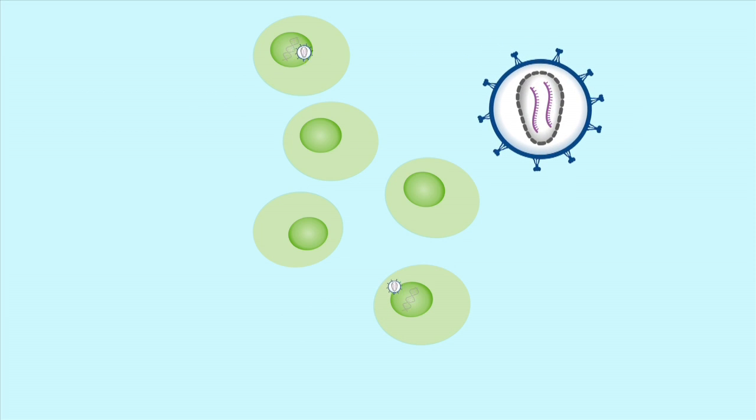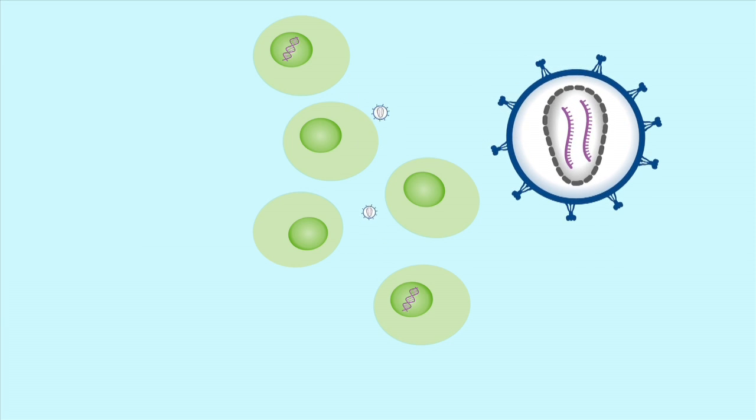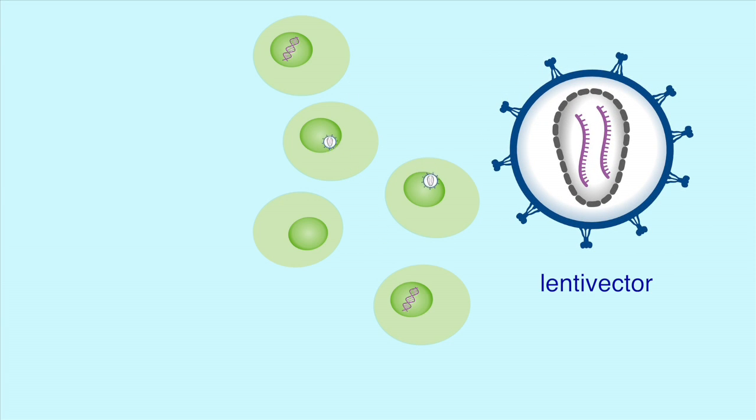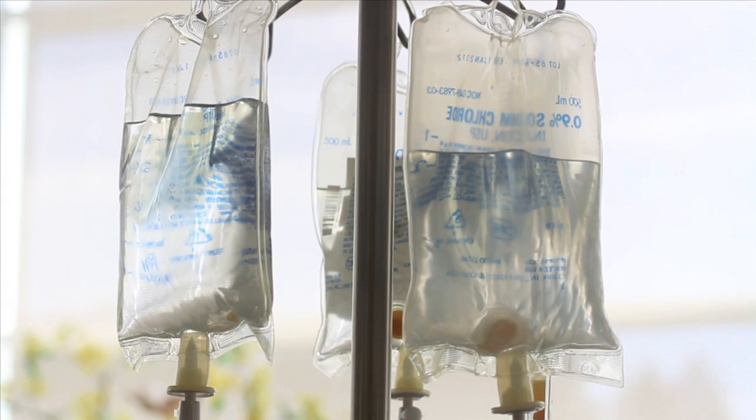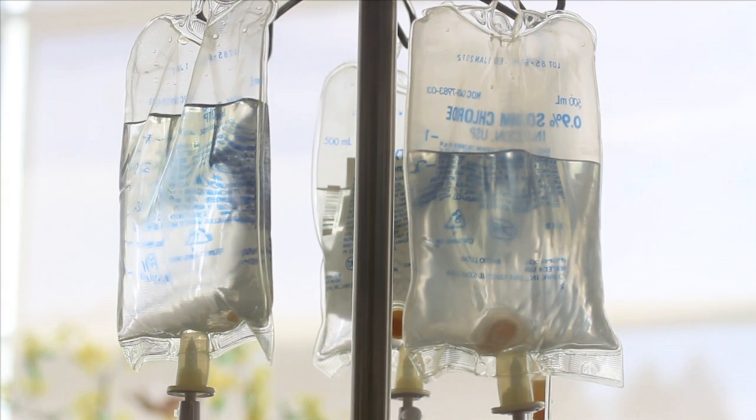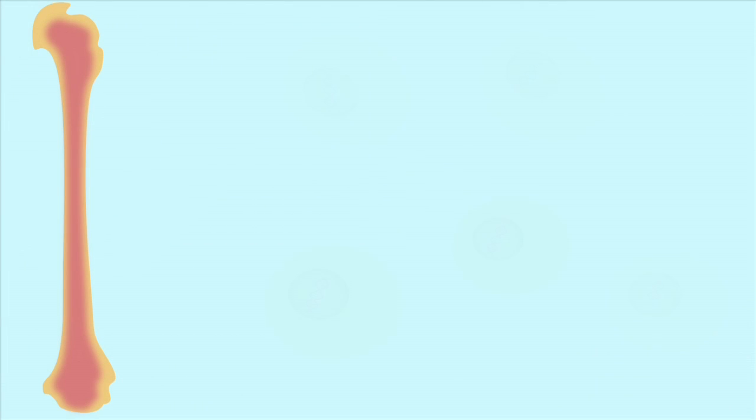The researchers exposed purified stem cells to a viral vector carrying a corrected gene. Dr. Malik and his team collaborated with researchers at St. Jude Children's Research Hospital to develop a novel vector called a lentivector. Their new approach also included chemotherapy conditioning to create space in the bone marrow for the corrected stem cells.